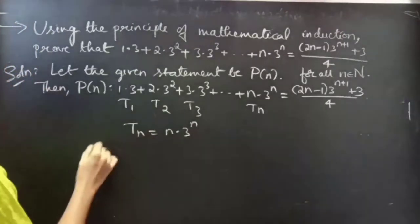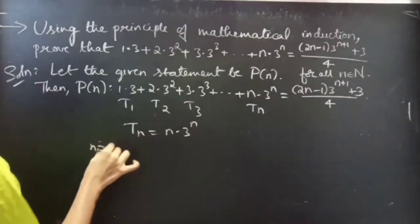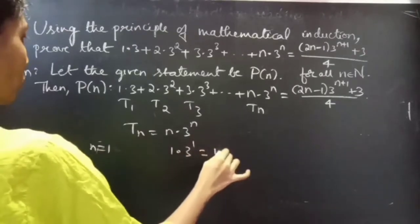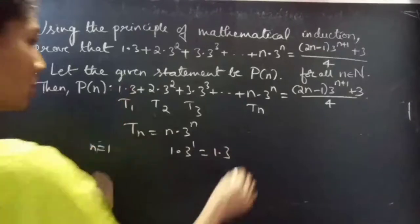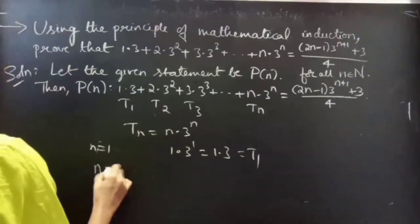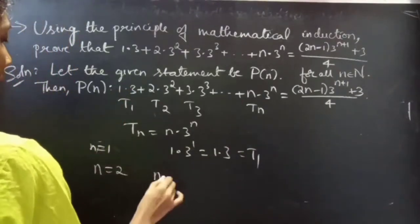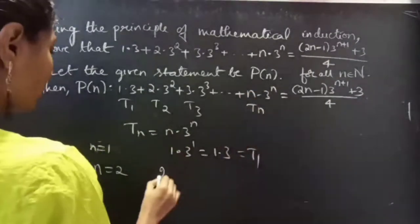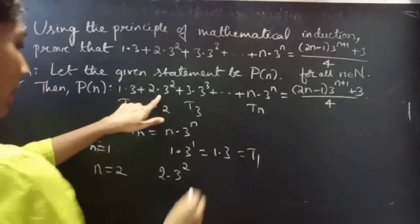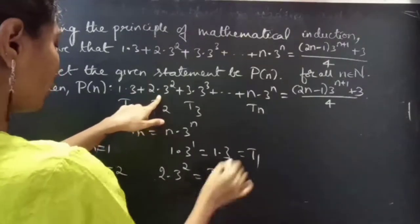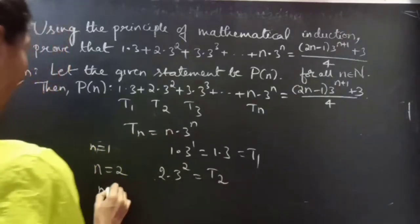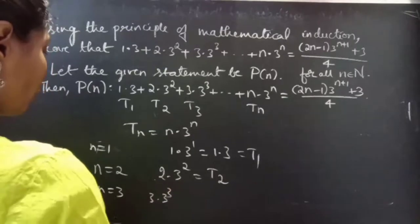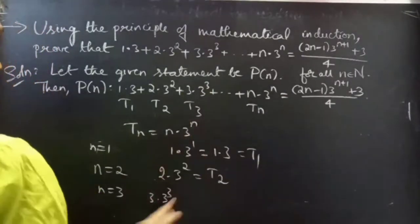We have Tₙ = n×3ⁿ. When n=1, you will get 1×3¹, which equals 1×3, which is our first term. When n=2, substitute n=2 in the nth term, you will get 2×3². This is our second term. For n=3, you will get the third term: 3×3³.